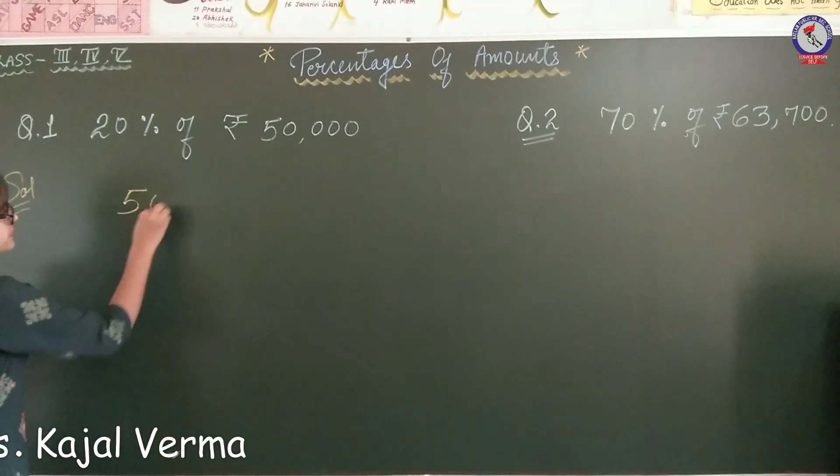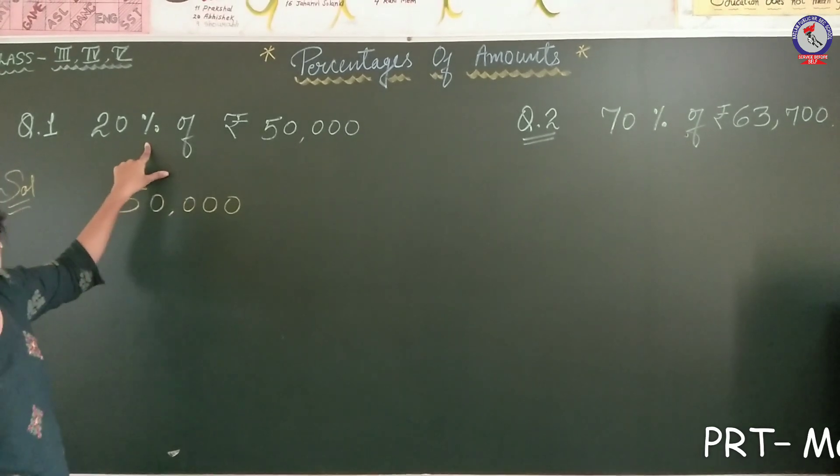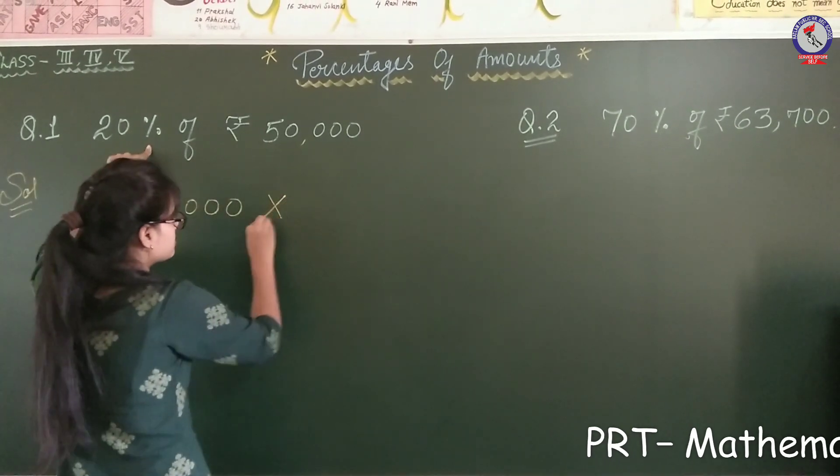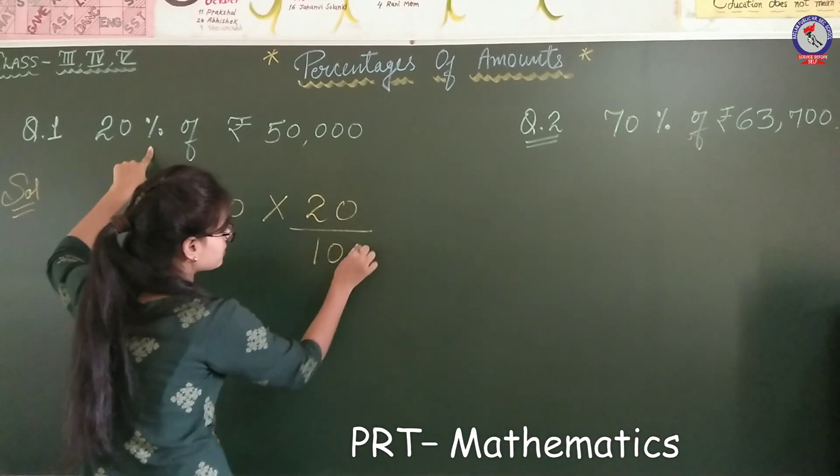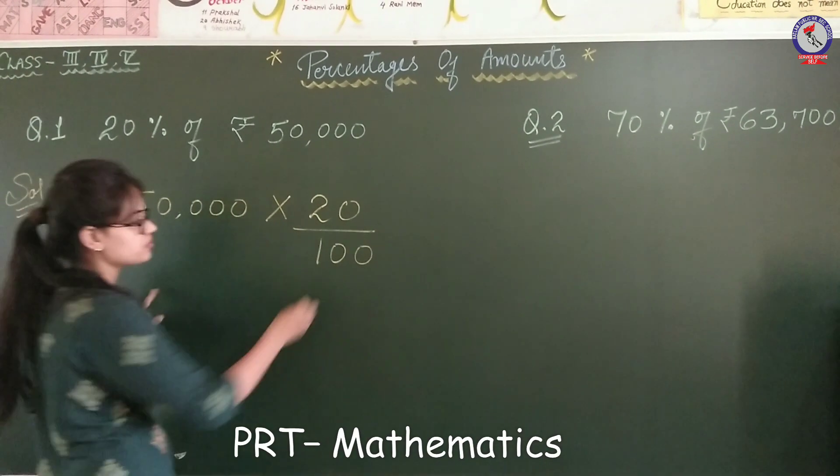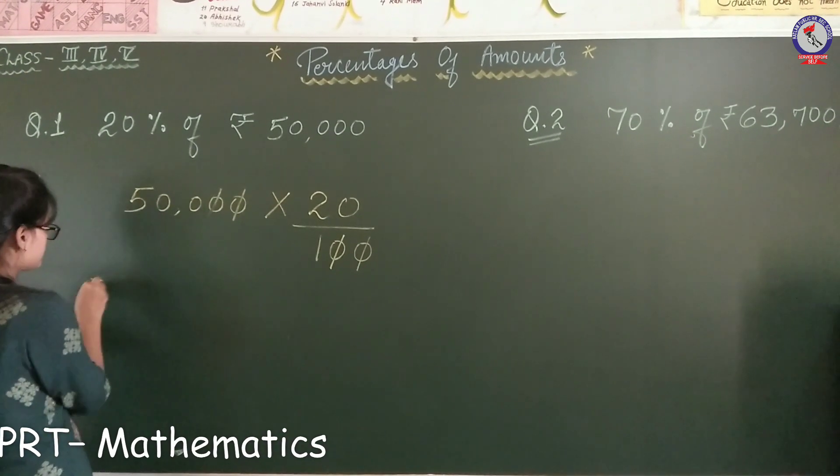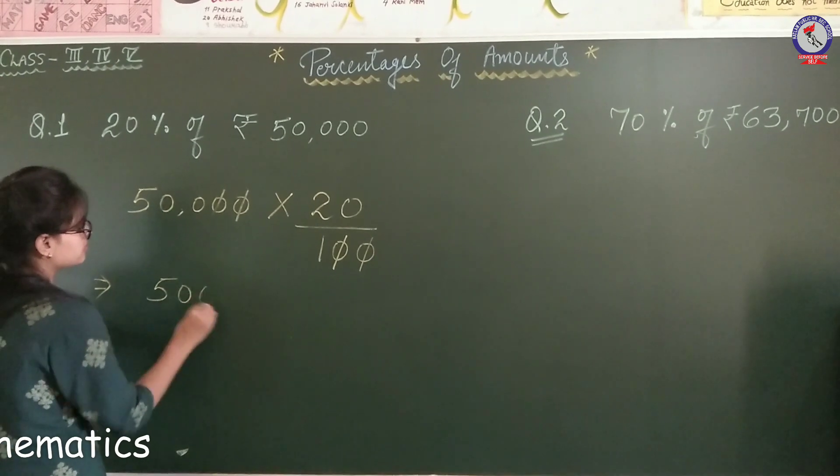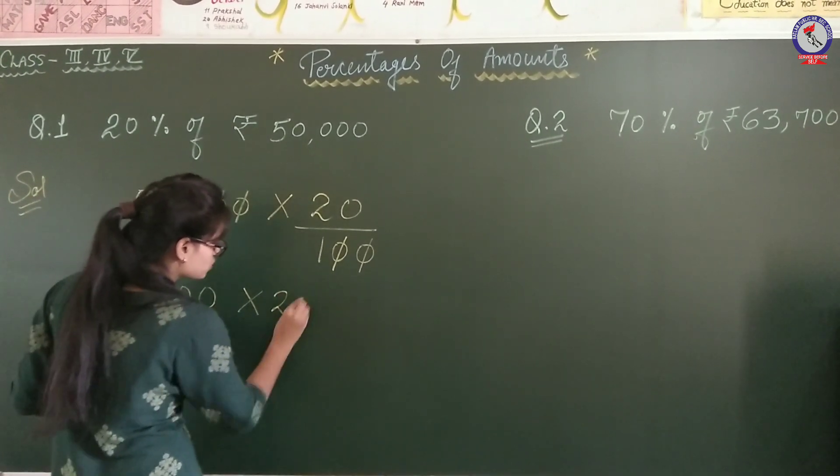This is 50,000. So, to find 20% of 50,000, we have to multiply by 20 and divide it by 100. So, we cancel - 20 cancels, the zeros cancel.